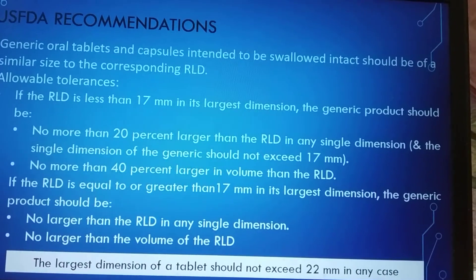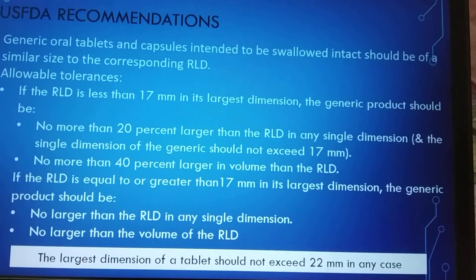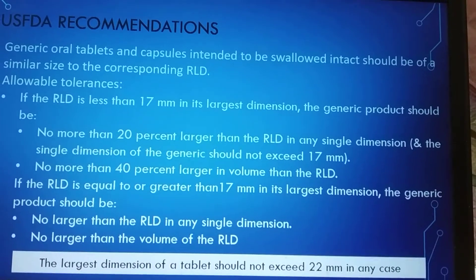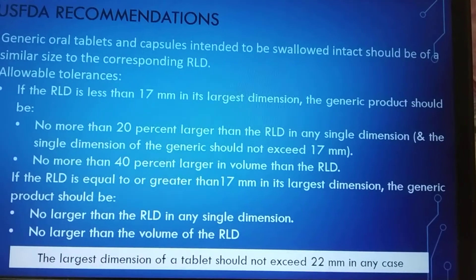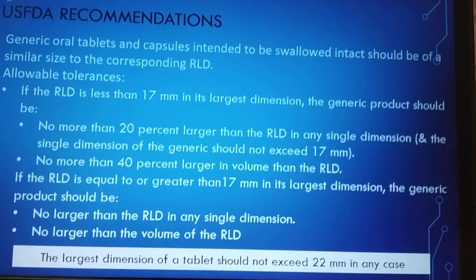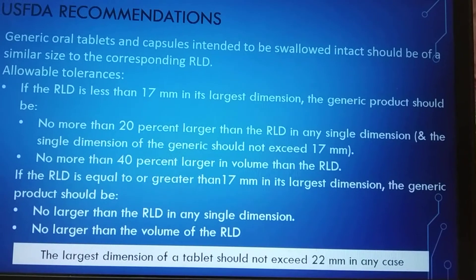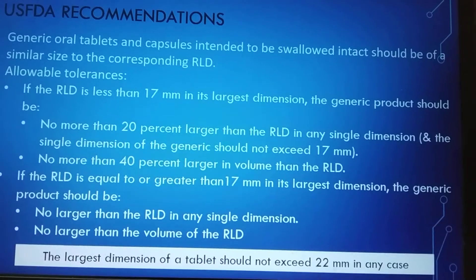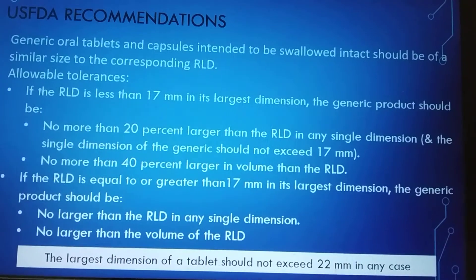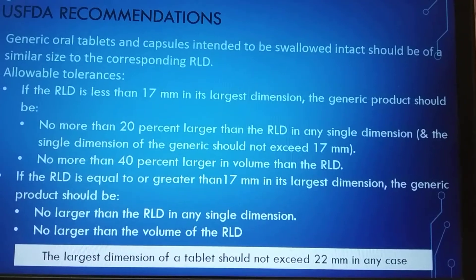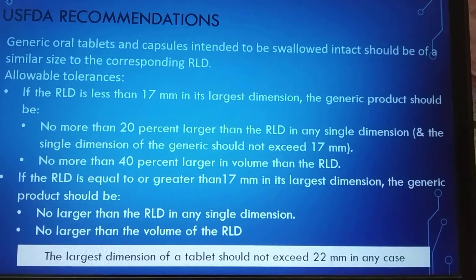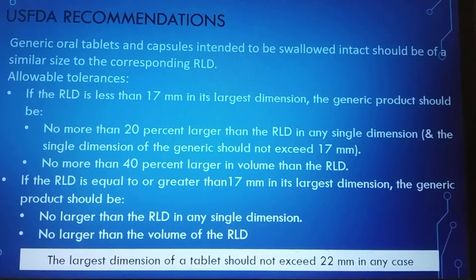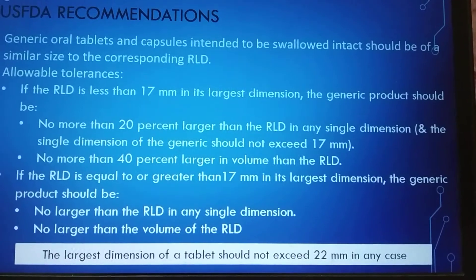Additionally, for RLDs of 17 mm or less, the volume of the generic dosage form should not exceed 40% greater than that of the RLD. For tablets or capsules with a largest dimension greater than 17 mm, the tolerances are more stringent: the generic product should not be larger than the RLD in any single dimension, and its volume should not exceed that of the RLD.